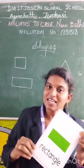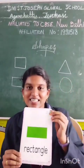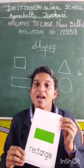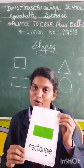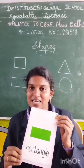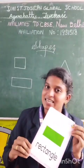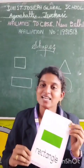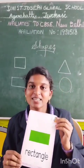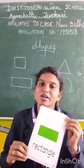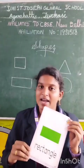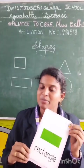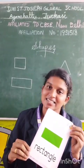I am a rectangle, rectangle. I have a really long square. I have four sides. I am a rectangle, rectangle. Once again: I am a rectangle, rectangle. I have a really long square. I have four sides. I am a rectangle, rectangle.